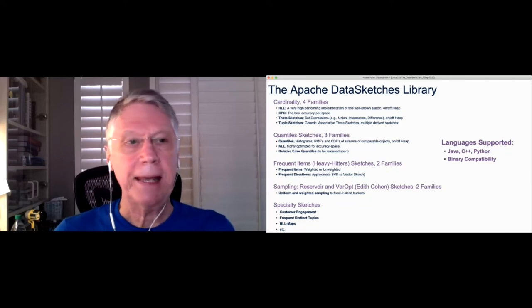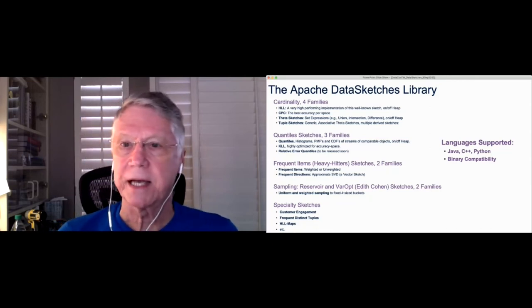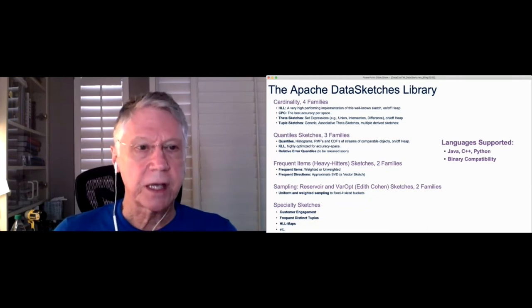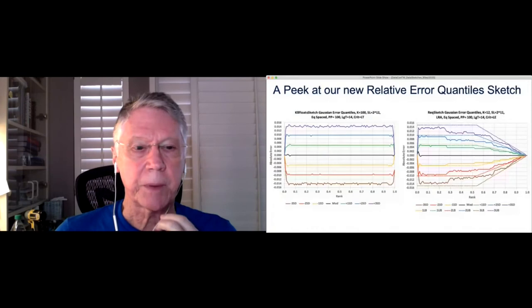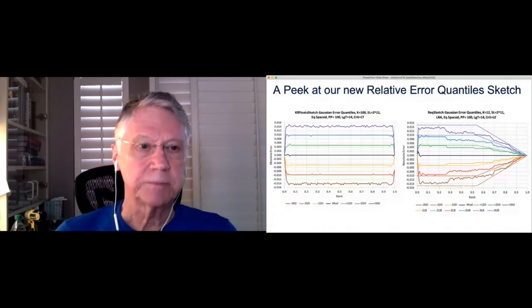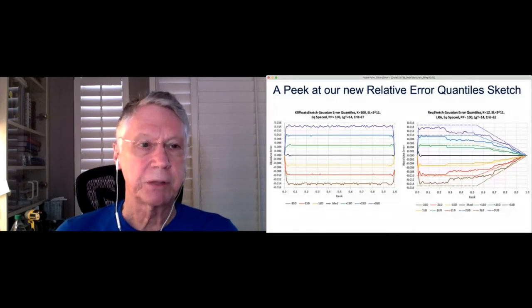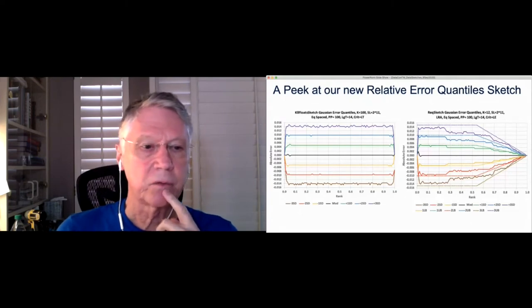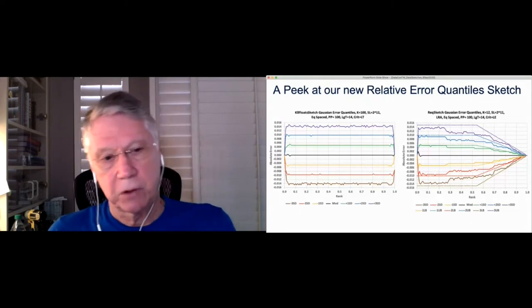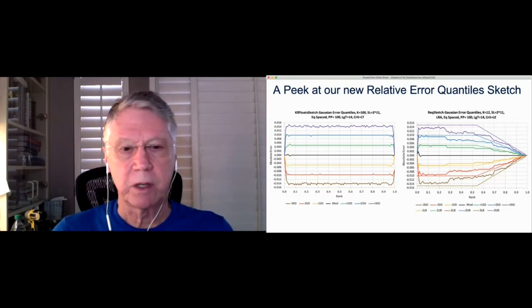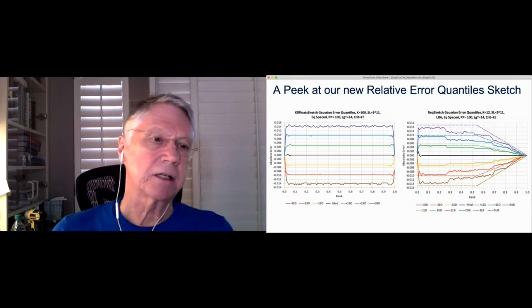So here's a little peek at our new relative error quantile sketch, and this will take me a minute to explain. On the left is the KLL float sketch. It's probably the most powerful quantile sketch to date that has been published. It was published a couple of years ago. And what I'm showing here is the error analysis over the ranks. And so if you're looking at, say, the 50th percentile that would be in the middle, the 90th percentile is what we call the 0.9 rank of your data. And the error is on the left.